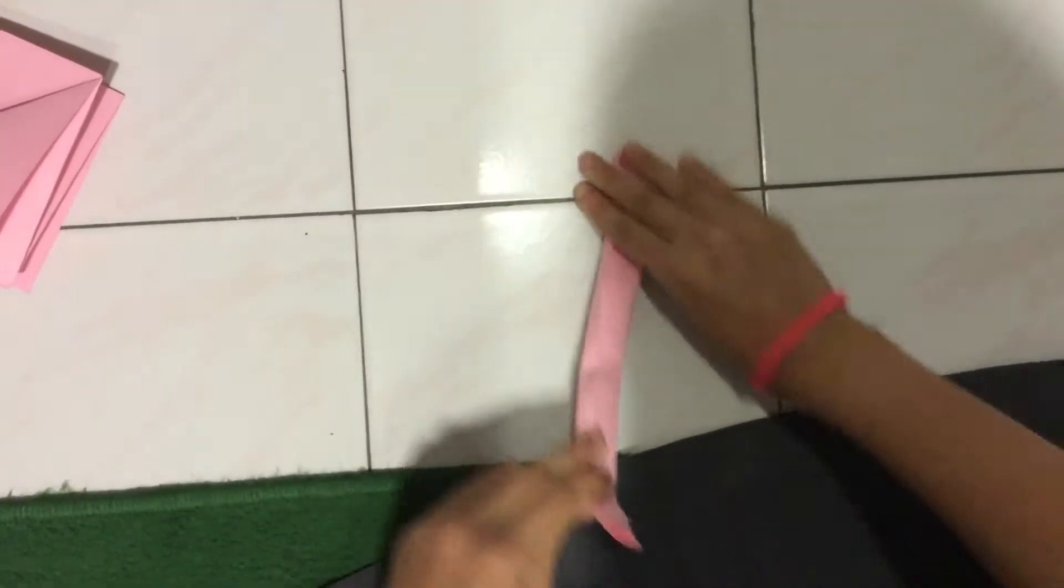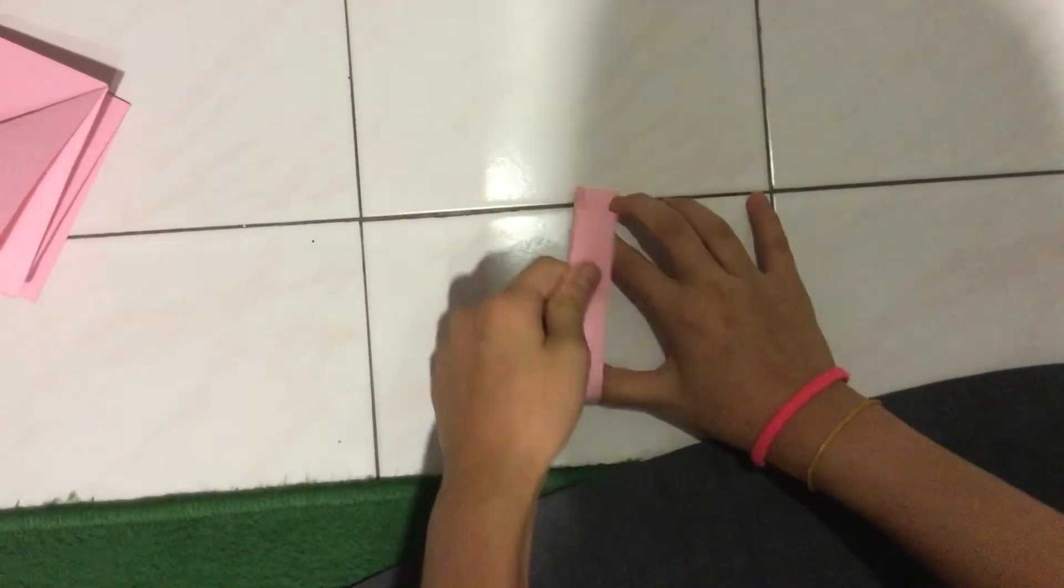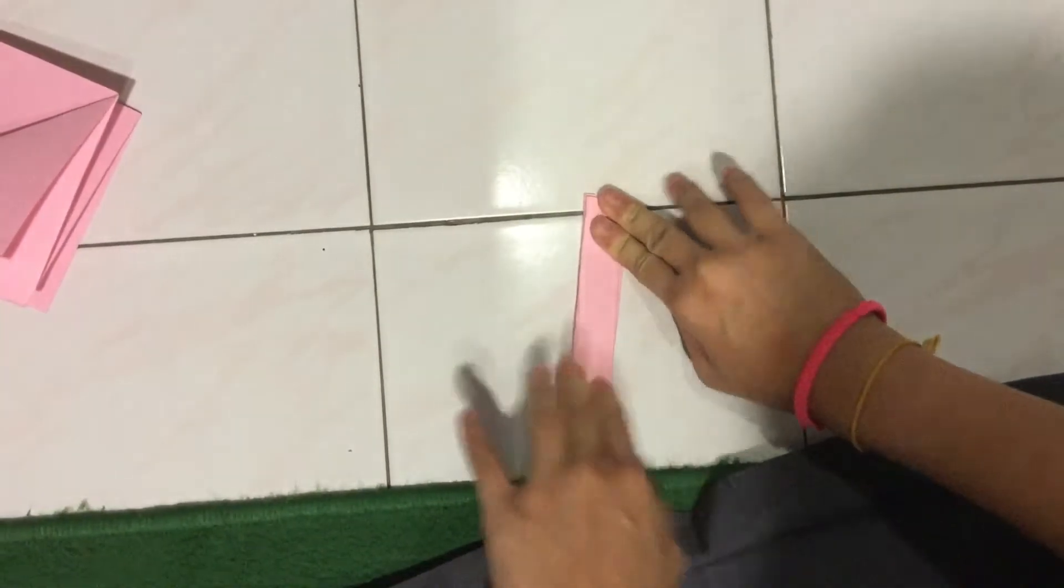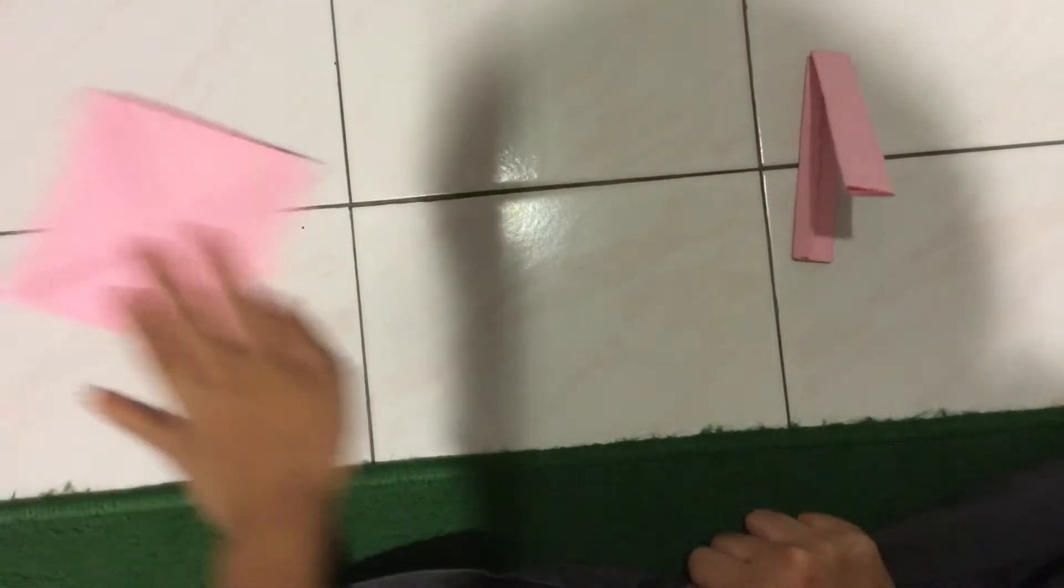Then you want to fold it in half so that it's evenly on each side, or else the basket won't be even. Okay, then you can just put this over here.